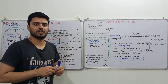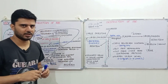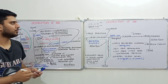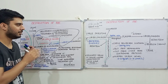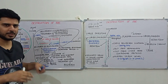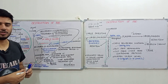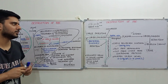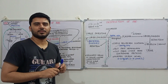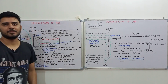This was everything regarding the destruction of the RBC. This topic is very important because it forms the basis for the classification of jaundice, which we'll be discussing in further lectures. Please remember this content, as we'll be utilizing it in our next topic on the classification of jaundice.